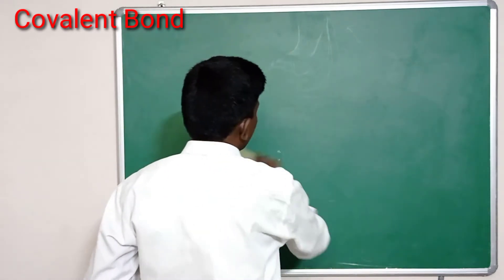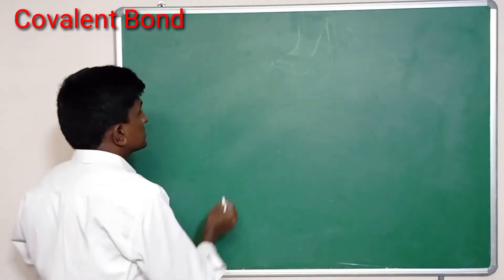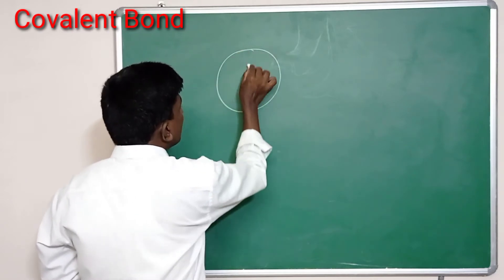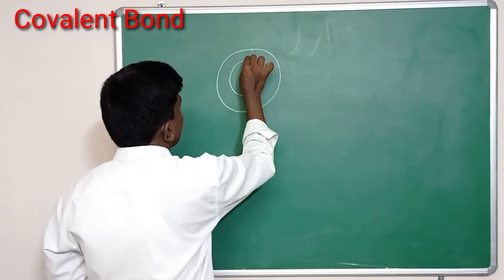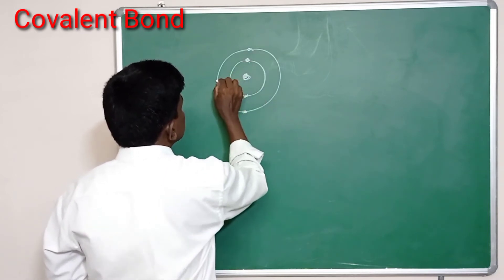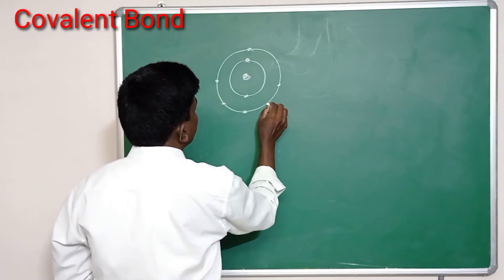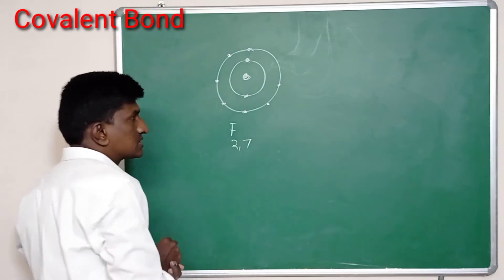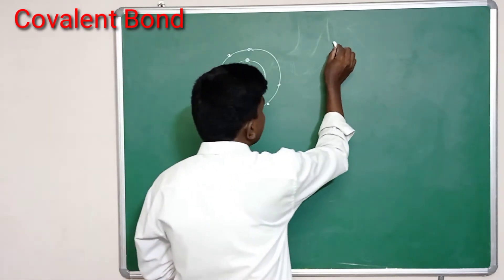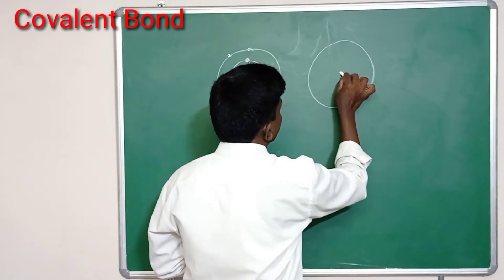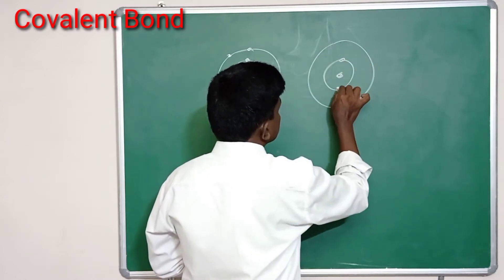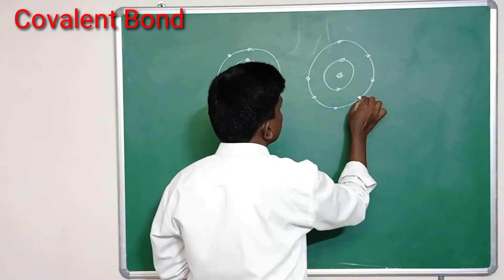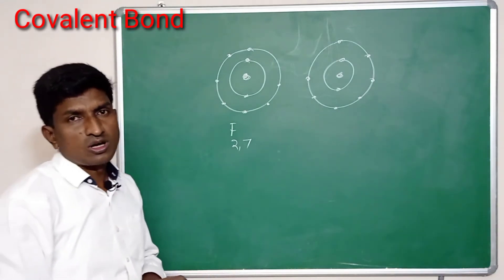Let us discuss the formation of fluorine. Fluorine has two electrons in its inner orbit and seven electrons in its outer orbit — two electrons in the first orbit and seven electrons in the second orbit. Similarly, a second fluorine atom is also the same: two electrons in its inner orbit and seven electrons in its outer orbit.